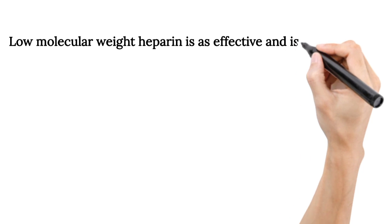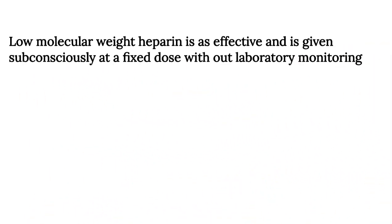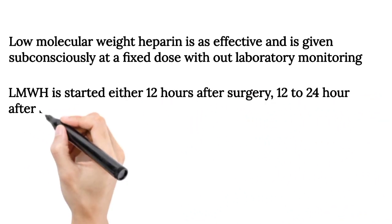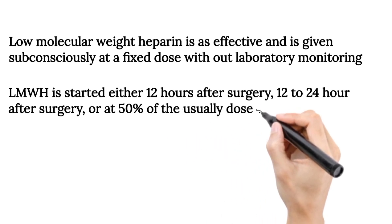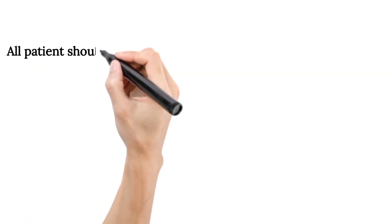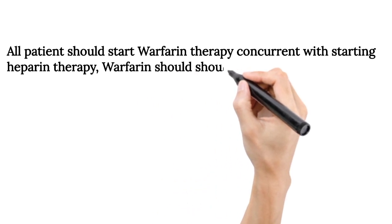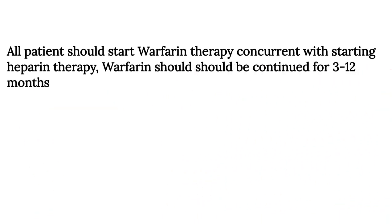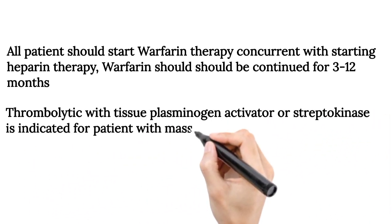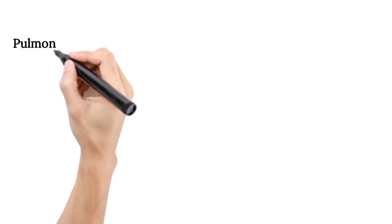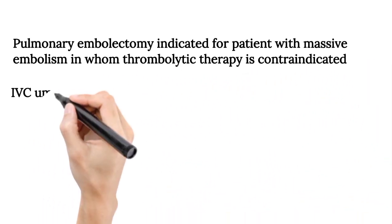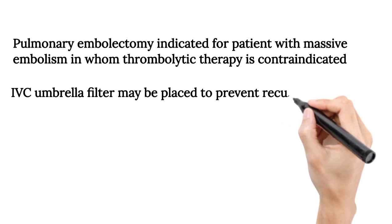Low molecular weight heparin is as effective as unfractionated heparin and is given subcutaneously at a fixed dose without laboratory monitoring. LMWH is started either 12 hours before surgery, 12 to 24 hours after surgery, or at 50% of the usual dose 4 to 6 hours after surgery. All patients should start warfarin therapy concurrent with heparin therapy; warfarin should be continued for 3 to 12 months. Thrombolytics with tissue plasminogen activator or streptokinase are indicated for patients with massive PE. Pulmonary embolectomy is indicated for patients with massive embolism when thrombolytic therapy is contraindicated. An inferior vena cava umbrella filter may be placed to prevent recurrent pulmonary emboli.